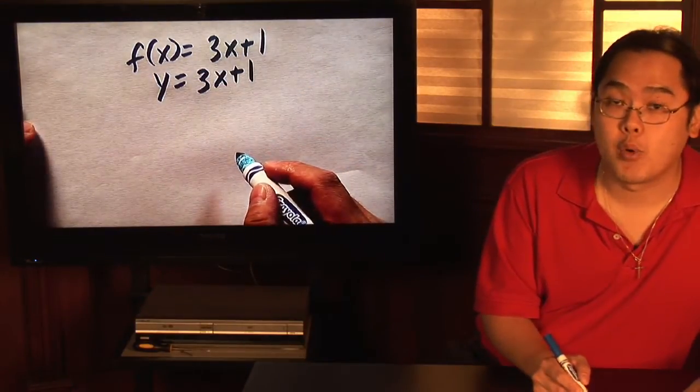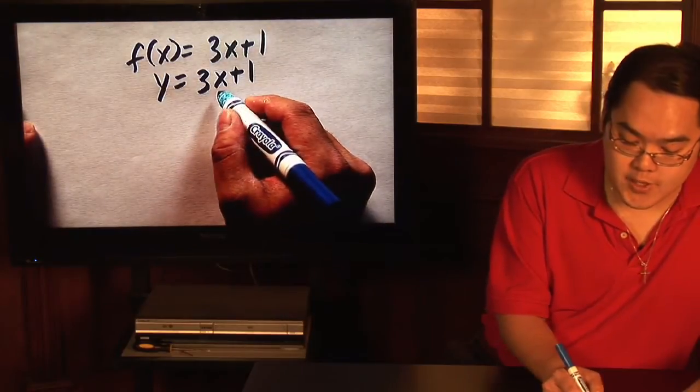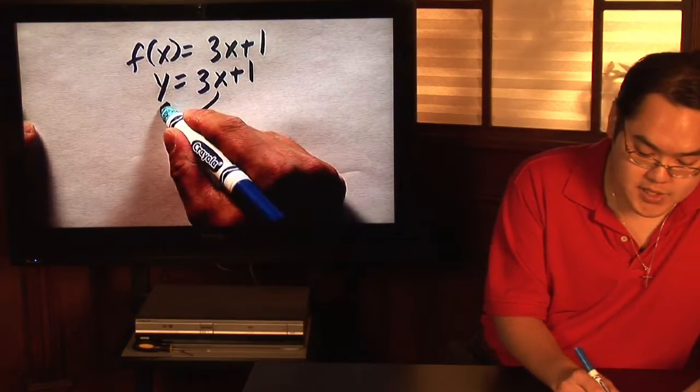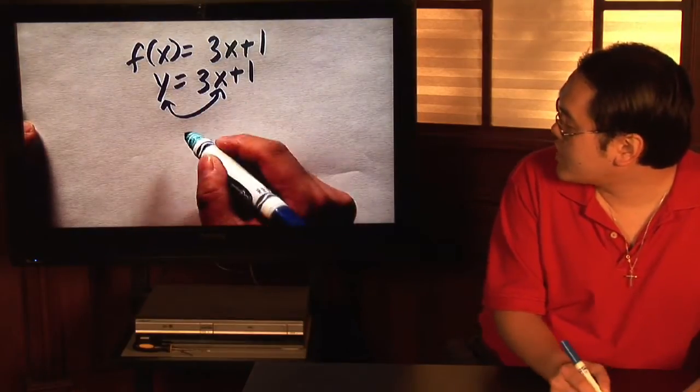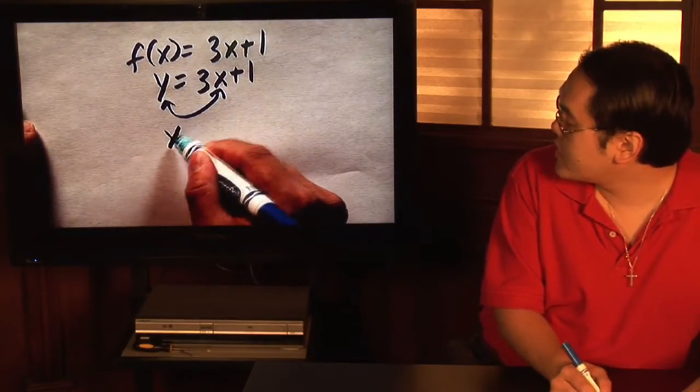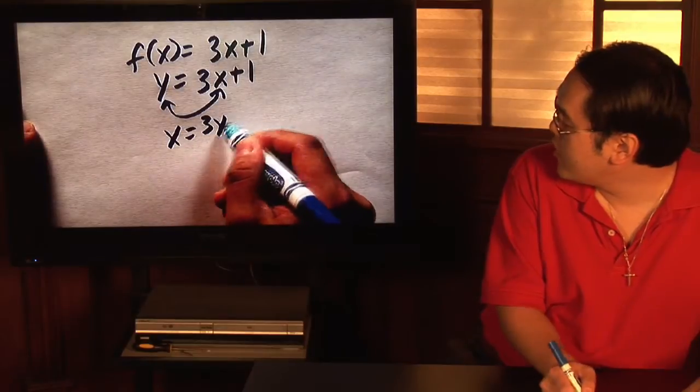Now, here's the most important part. For every x and y, you switch places. In other words, for every x, put y there, and for every y, put x. So your new equation is going to be x equals 3y plus 1.